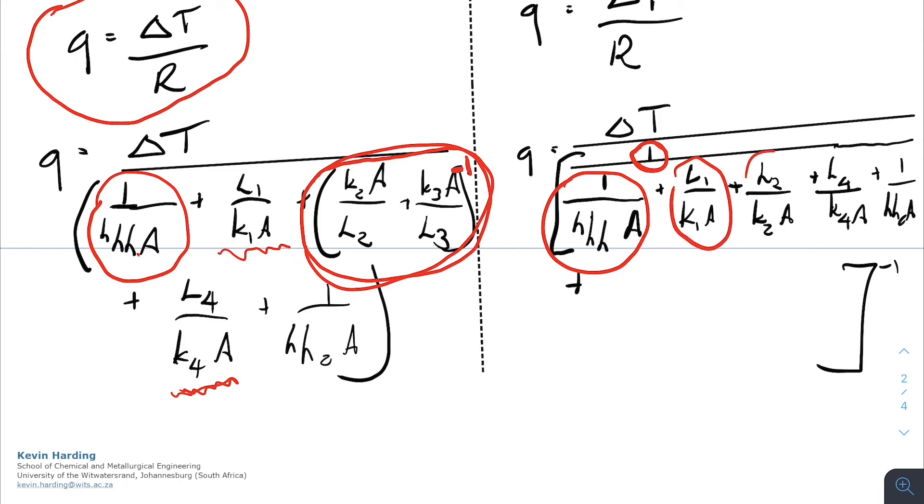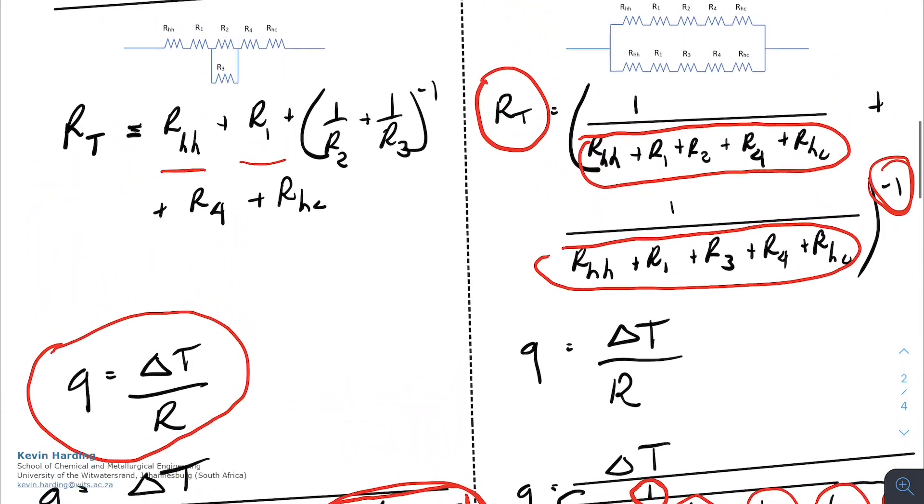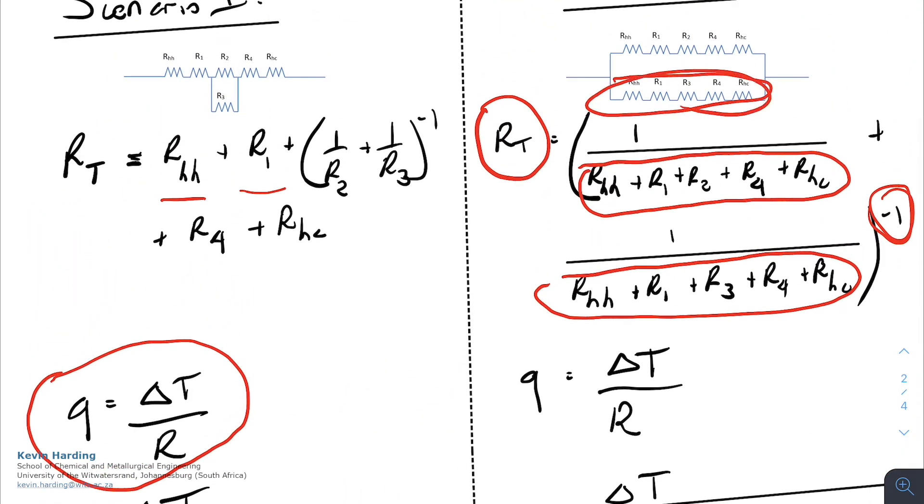Plus L1, K1, L2, K2, 4, and then the convective on the other side, and we'll do exactly the same thing for the bottom string of that thermal resistance that we had at the top.